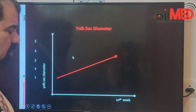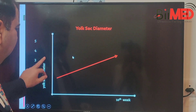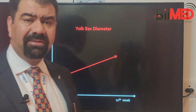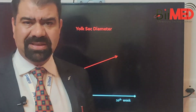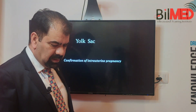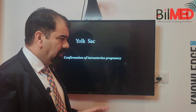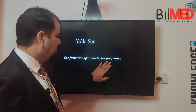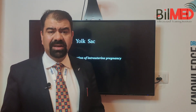The yolk sac should not be less than two millimeters, and it should not be more than five millimeters — it should be in between two and five millimeters. A very large yolk sac is abnormal, and a very small yolk sac is also abnormal. The normal cut-off is between two to five millimeters.